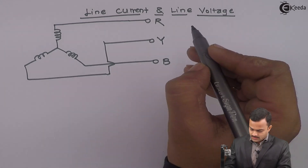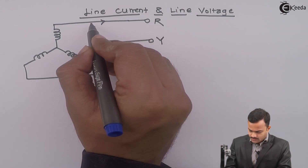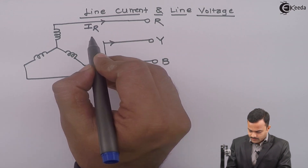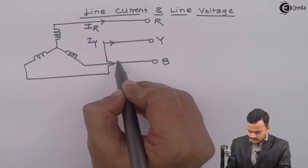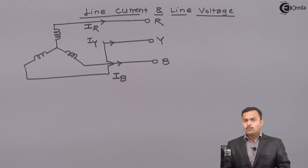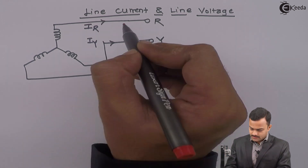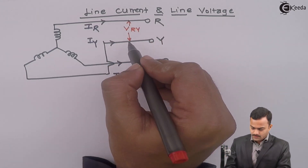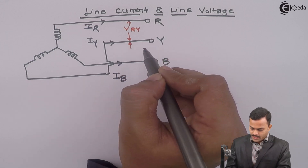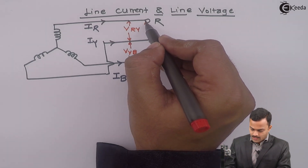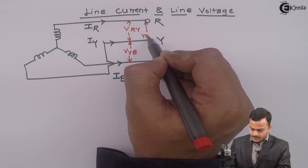Current carried by any line is called as line current — a very simple definition. So I will write: the current flowing through the R line is IR, through the Y line is IY, and through the B line is IB. And voltage between two lines is called as line voltage. So here it is VRY, then between Y and B it is VYB, and finally between R and B it is VBR.